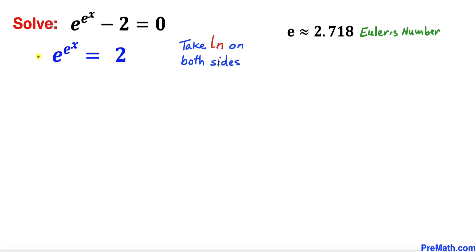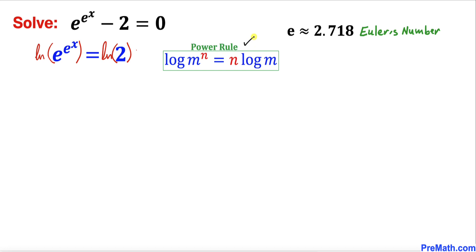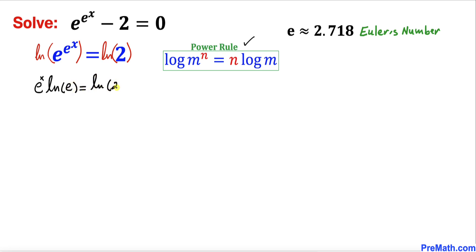Let's go ahead and take a natural log on both sides — ln on the left side and ln on the right side as well. Now let's recall the power rule: according to this rule, the exponent e to the power of x can be moved all the way to the front. Therefore we can write e to the power of x times natural log of e equals natural log of 2.